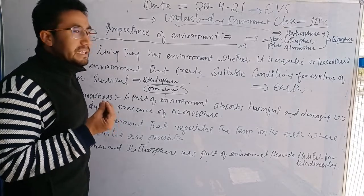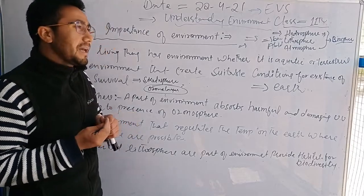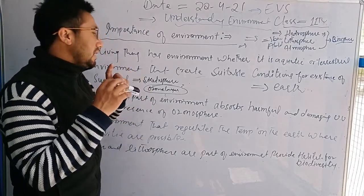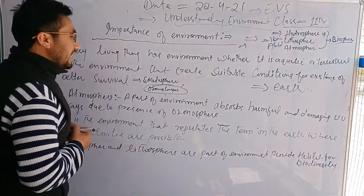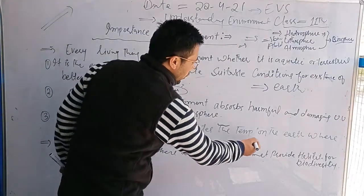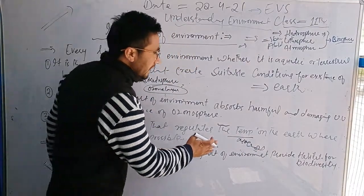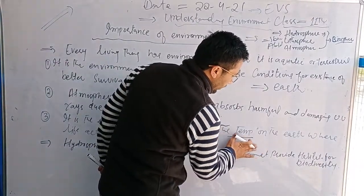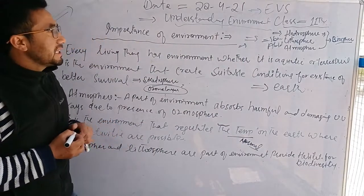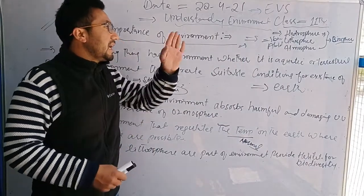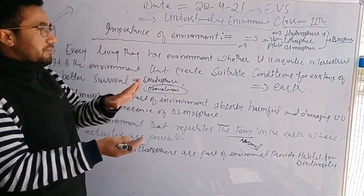The third importance is that the environment regulates the temperature of the Earth, where life activities are possible. Our environment has normal, moderate temperatures for every living being. If we don't have any atmosphere, what happens? The temperature becomes extremely warm or cold.